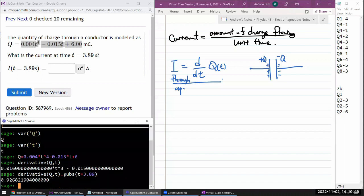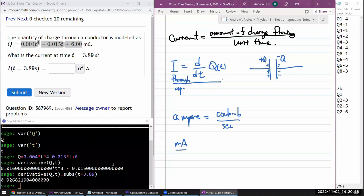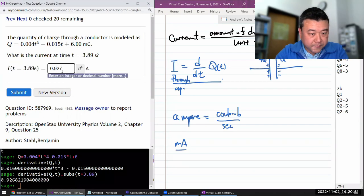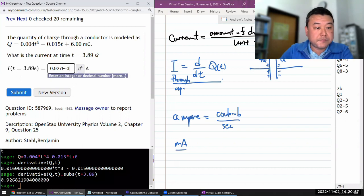Now, the only thing to be careful with is this quantity here. It's in unit of millicoulomb per second. So you have to convert to an ampere. One ampere is coulombs per second. So if they were asking for the answer in the unit of milliampere, then I could just give this. But because it's not, I have to convert from milliampere to ampere. So it's going to be smaller by a factor of a thousand. So it will be 0.927 times 10 to the power of minus three, accounting for conversion from milliampere to ampere.